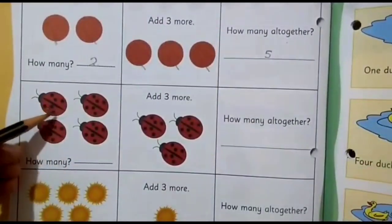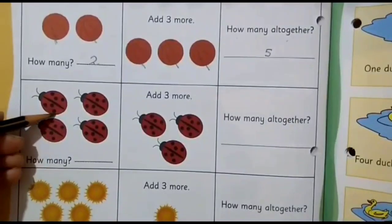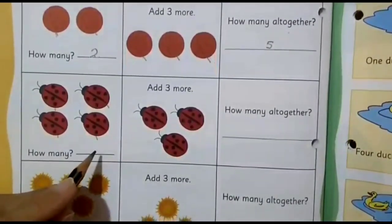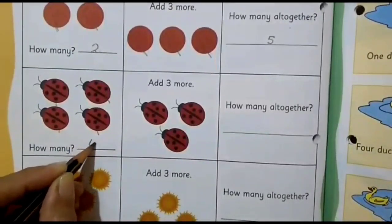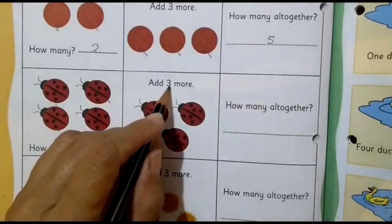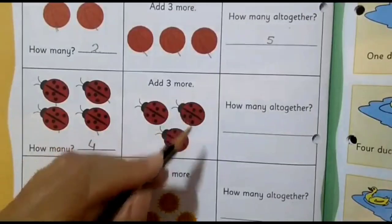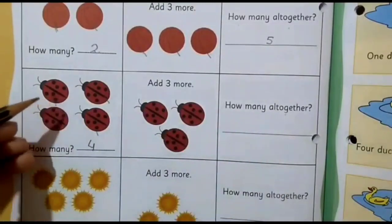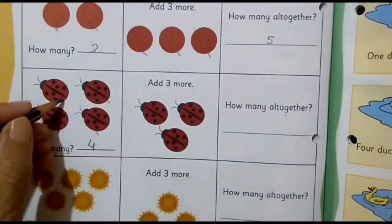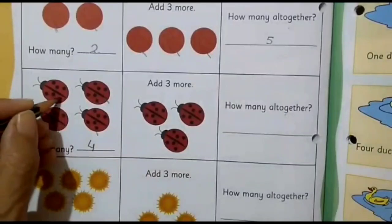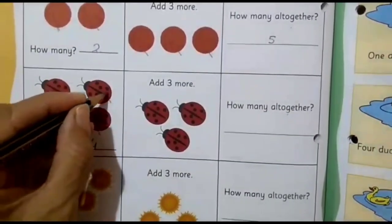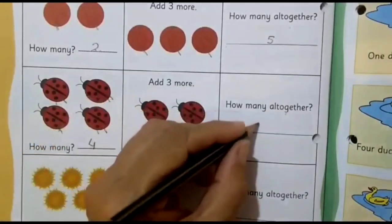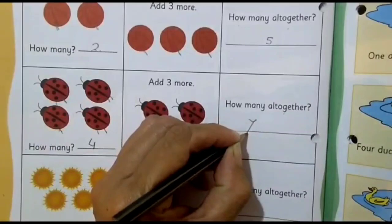Next, how many ladybugs can you see here? One, two, three and four. So number four will come here. Add three more — here one, two and three, three more ladybugs. The question is how many all together. Whenever you are doing addition, you have to do in all, all together. One, two, three, four, five, six and seven. So number seven will come here.